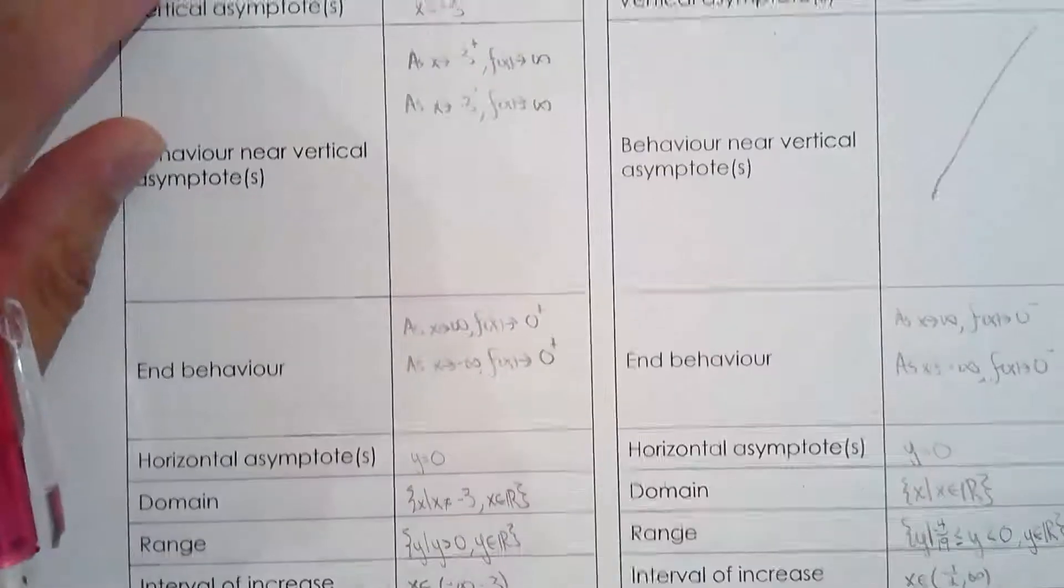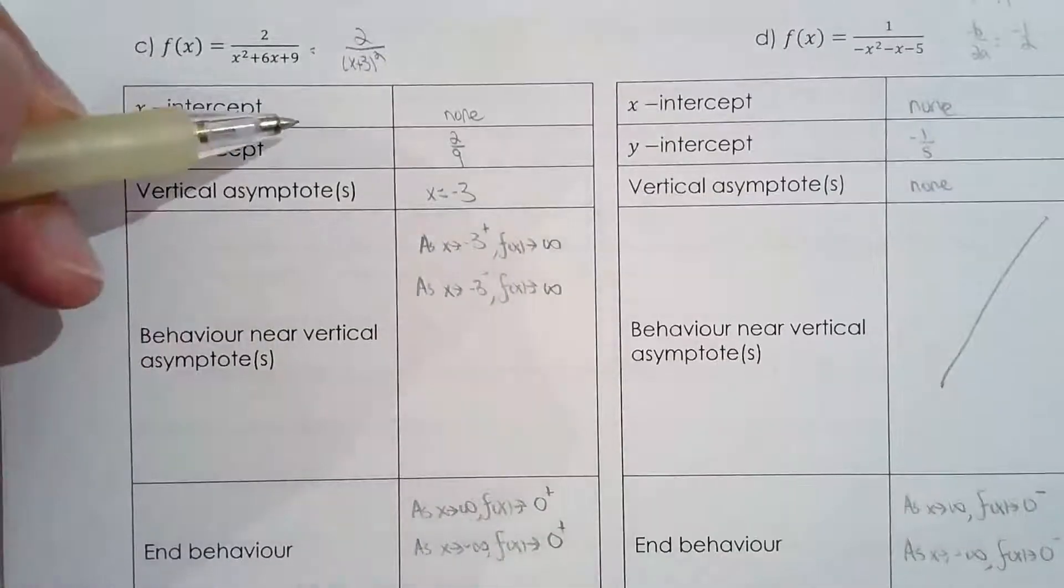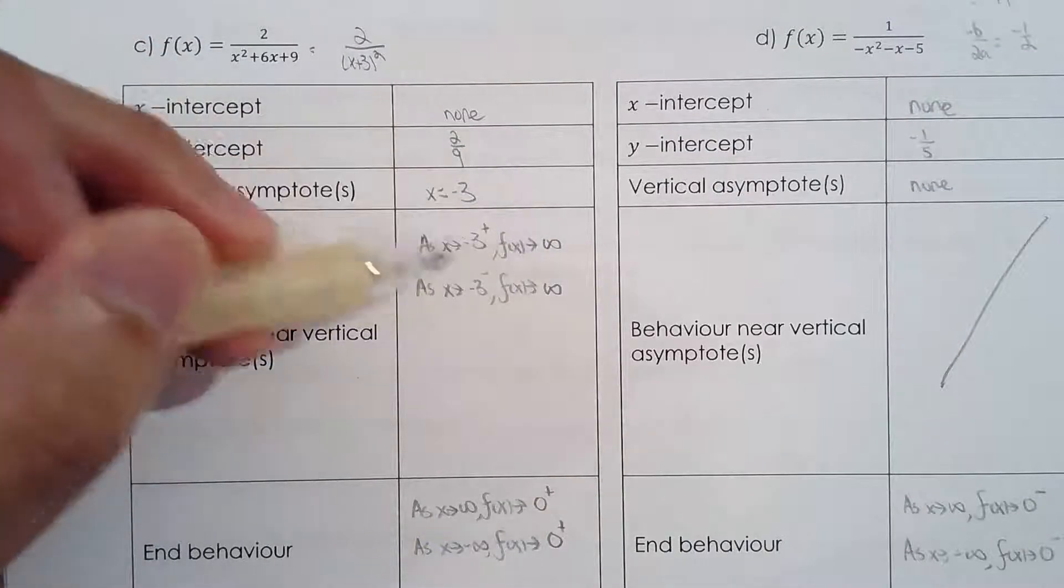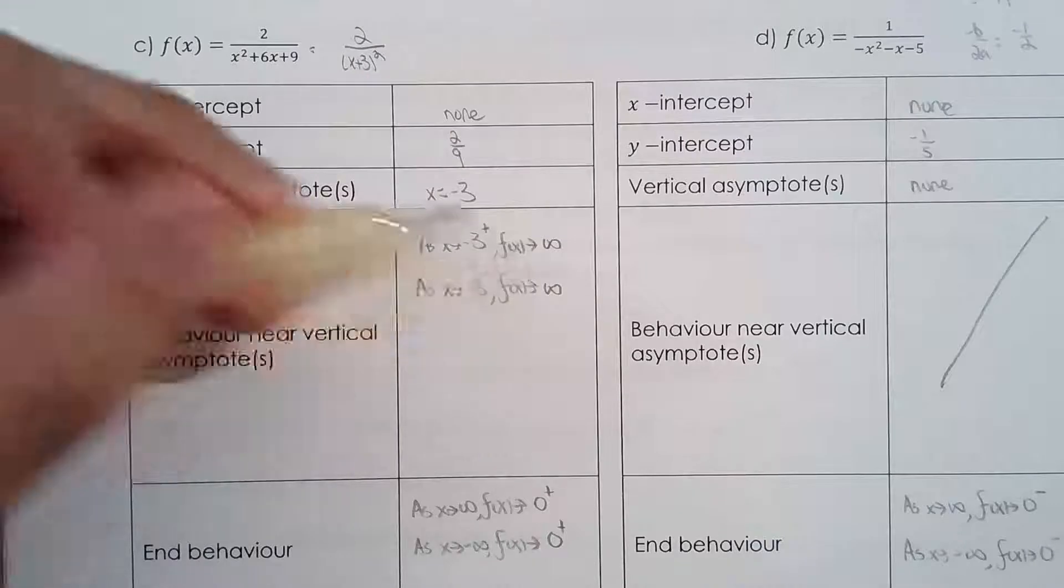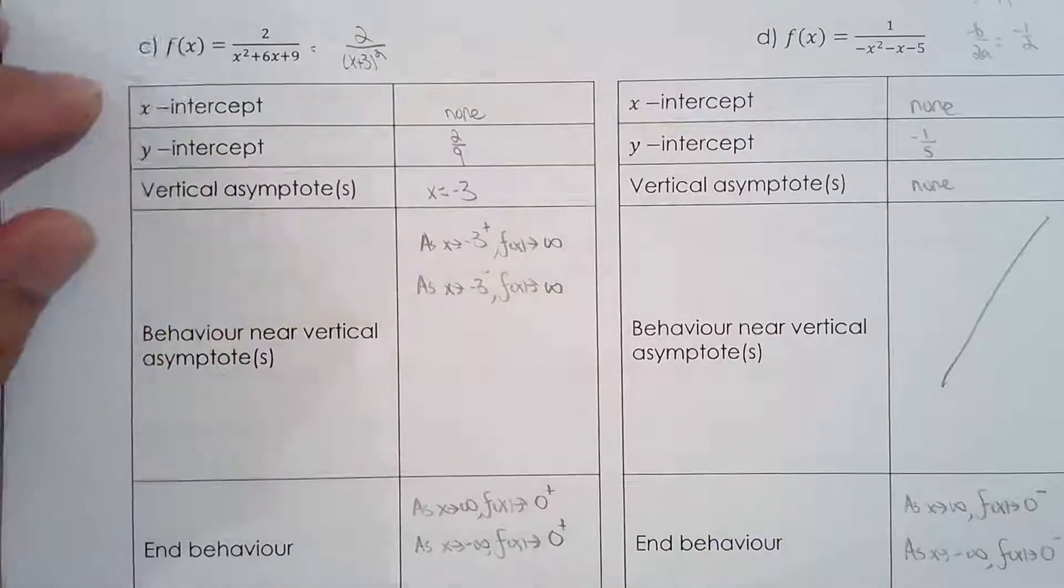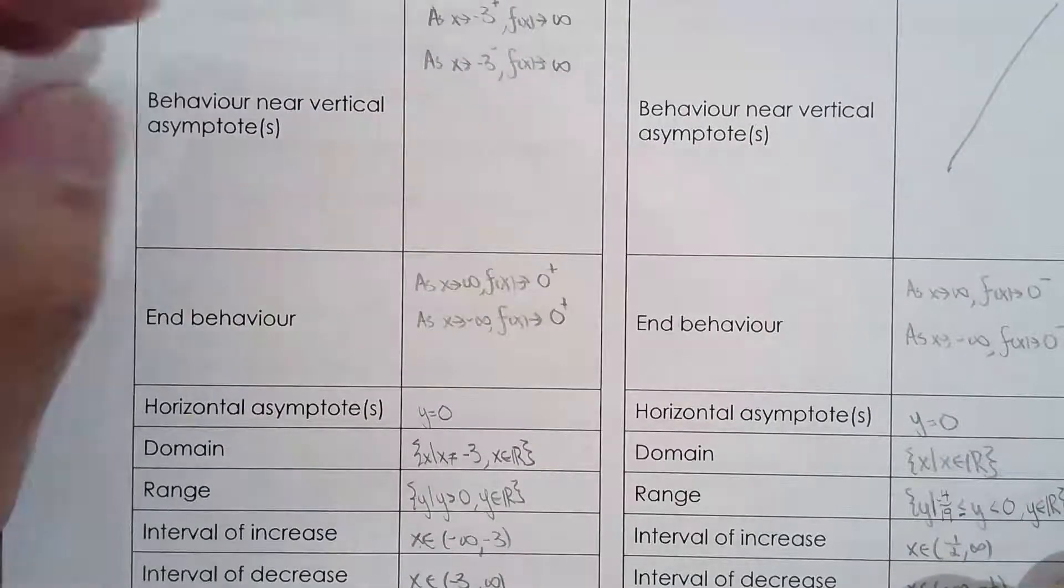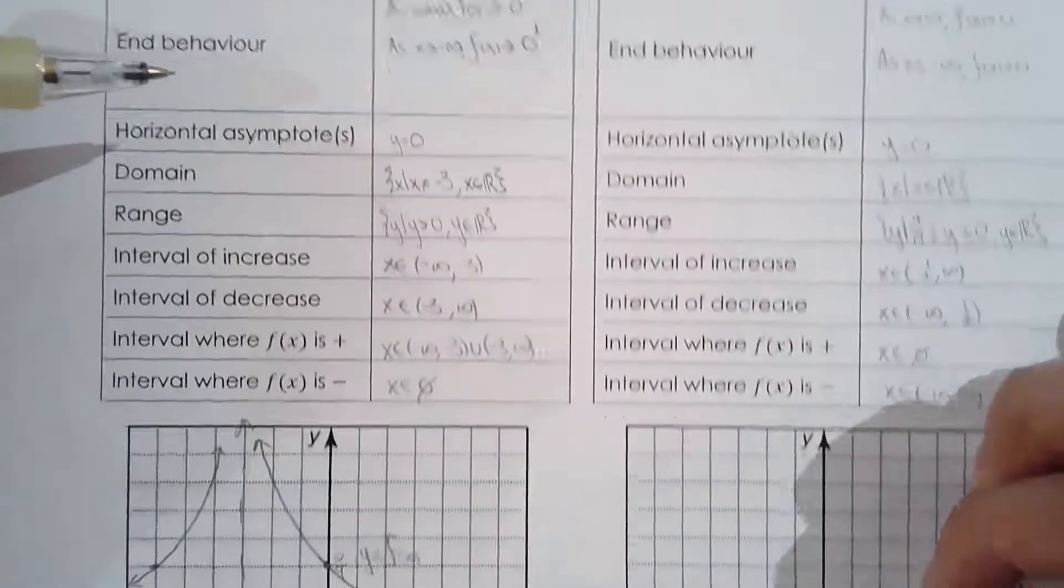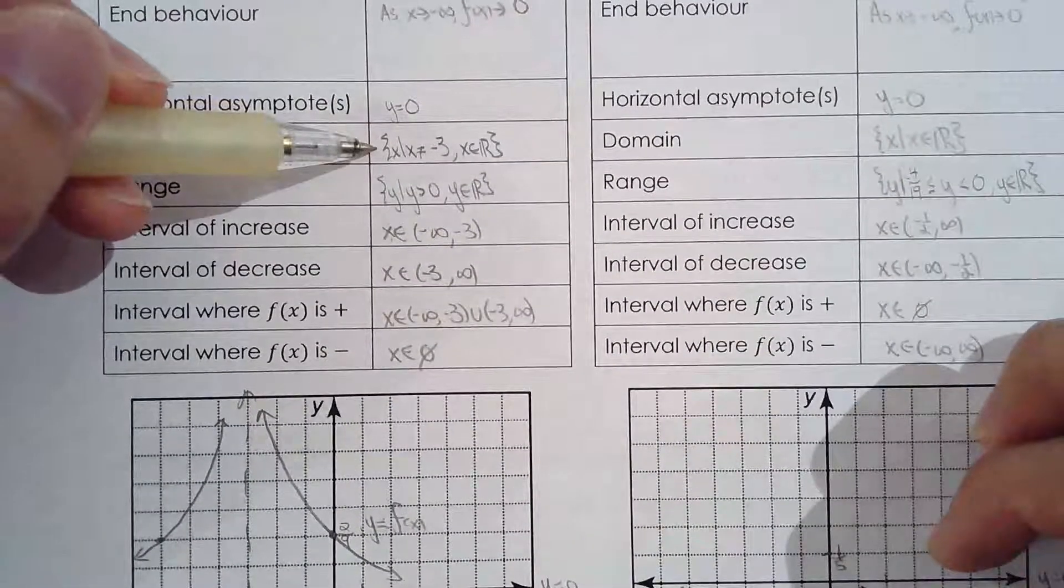Let's go back up, I'll show you the table again. So x-intercept, y-intercept, I start off with that and then I generate the graph and I filled in this cell, the behavior near the vertical asymptote. I filled in the end behavior. I know the horizontal asymptote.